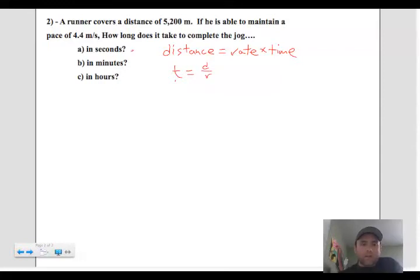So we'll look at A first. For A, the time is equal to the distance, which is 5200 meters, divided by the rate, which is 4.4 meters per second. If you punch that into your calculator, you get a value that comes out to be 1181.82 seconds.